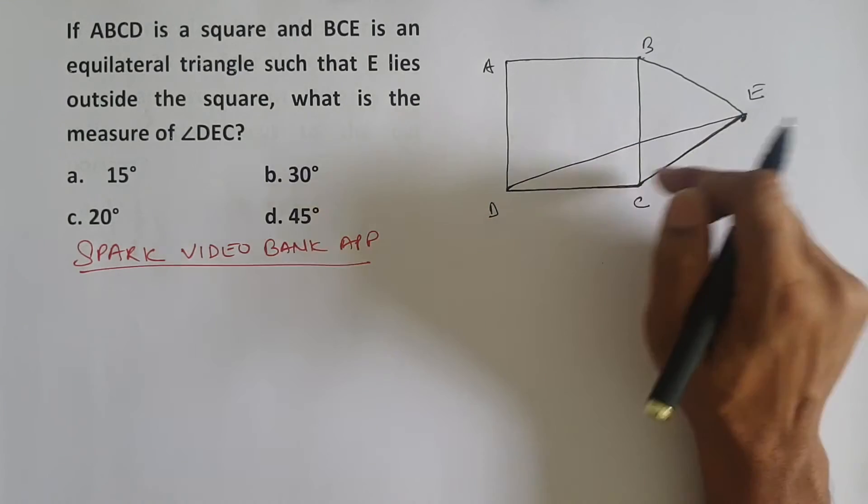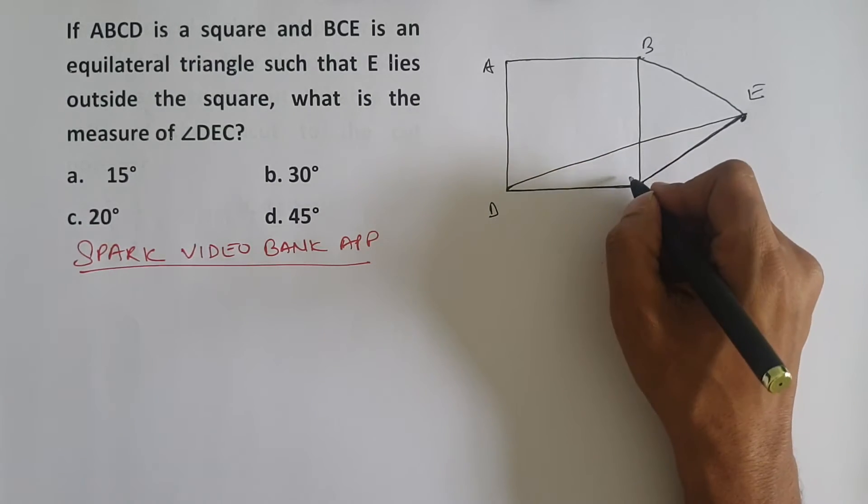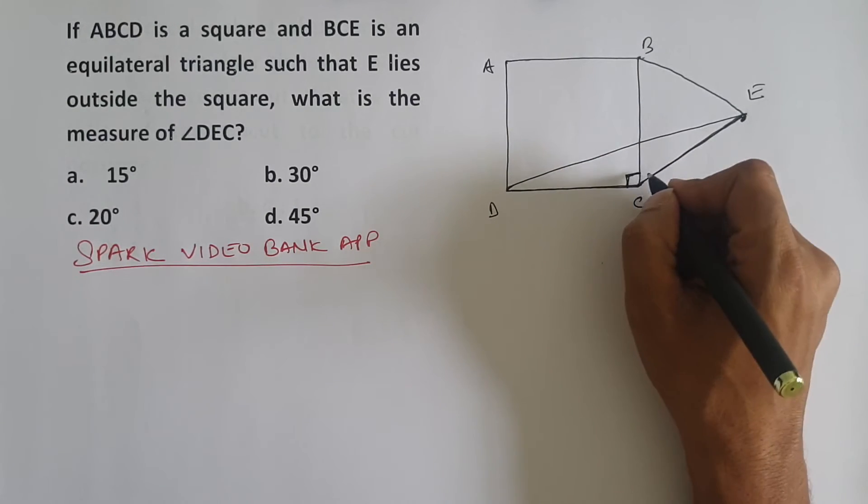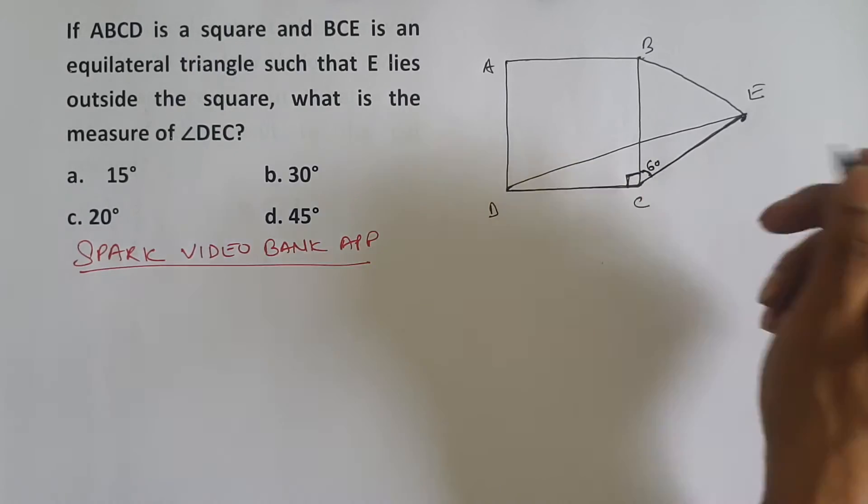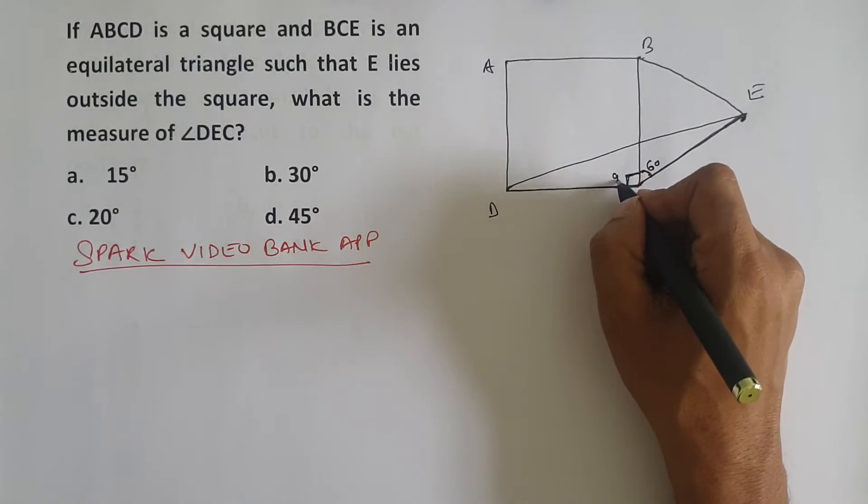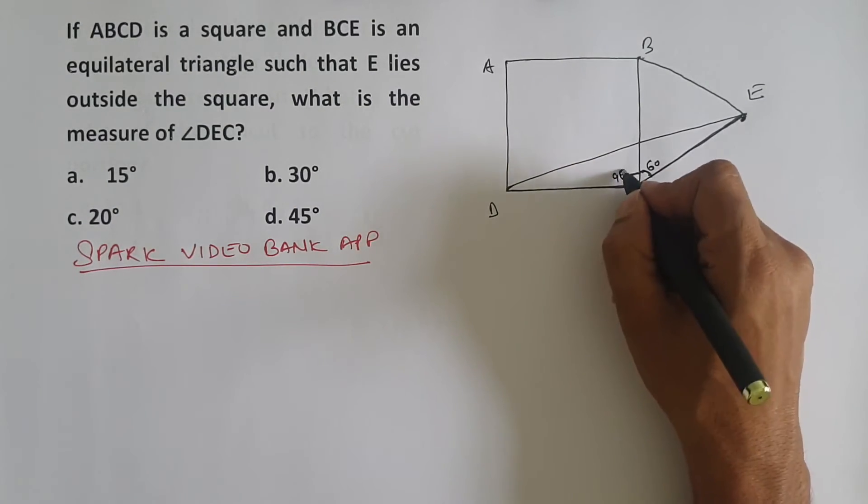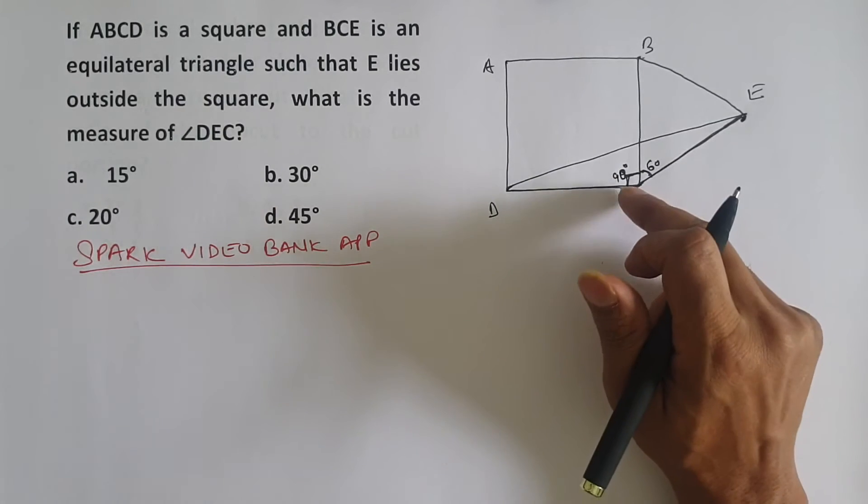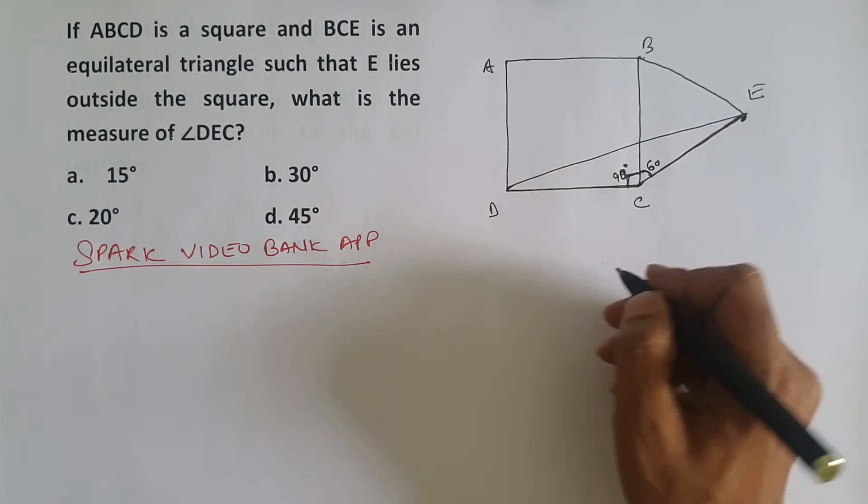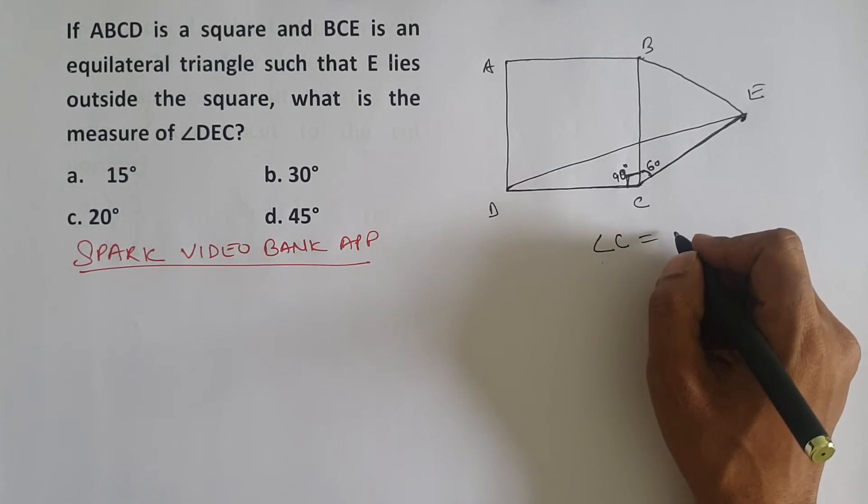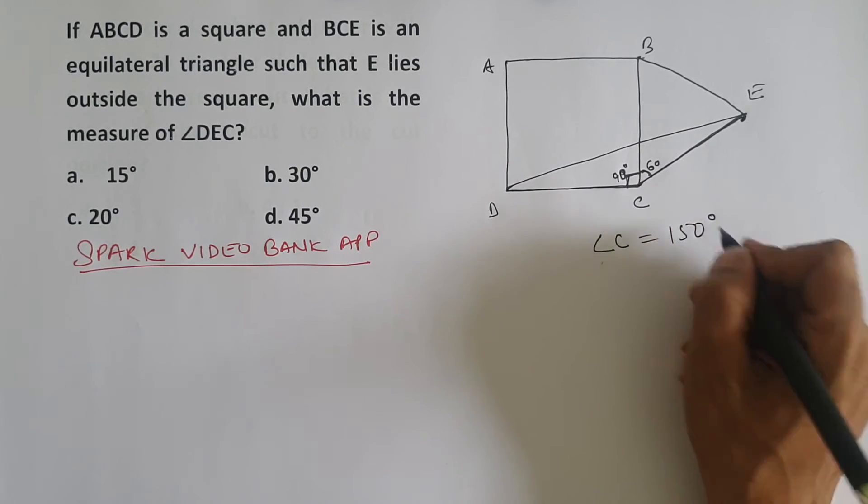So this becomes an isosceles triangle. And this angle is 90 degrees, and this is 60 degrees. Because it is square, it is 90 degrees. Equilateral triangle is 60 degrees. So angle C becomes 150 degrees.